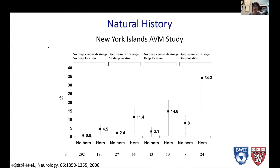To look at the natural history, there was a landmark study done in 2006, often referred to as the New York Island study, out of Columbia. The authors examined the effect of deep venous drainage and deep location on the risk of hemorrhage of an AVM. There is a large gradient of risk depending on features present. Even for a superficial AVM with no deep venous drainage and no deep location, the risk of hemorrhage from a previously ruptured AVM is five times that of an unruptured AVM.